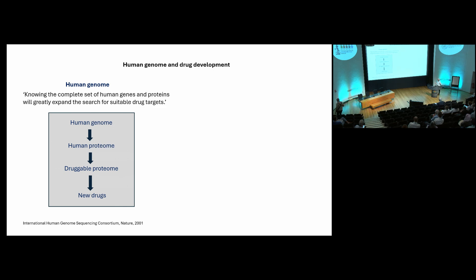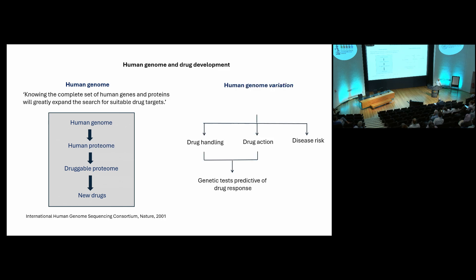Going back to 2001 with the first draft of the human genome sequence, the consortium authors said knowing the complete set of human genes and proteins will greatly expand the search for suitable drug targets. The principle is that the human proteome — the major category of drug targets — is encoded in the genome. So if we know all our genes, we know all potential proteins encoded and therefore all drug targets, enabling more efficient drug development.